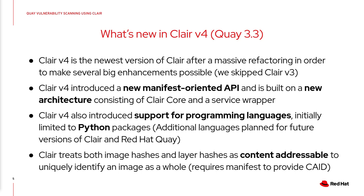We introduced an entirely new manifest-oriented API instead of the layer-based one we had in the past, and an entirely new architecture consisting of Clair Core and the indexer/matcher services. From an end-user perspective, probably the most important change is support for programming languages — initially Python, partly because Quay itself is written in Python. Additional languages are planned for future releases of both Quay and Clair.